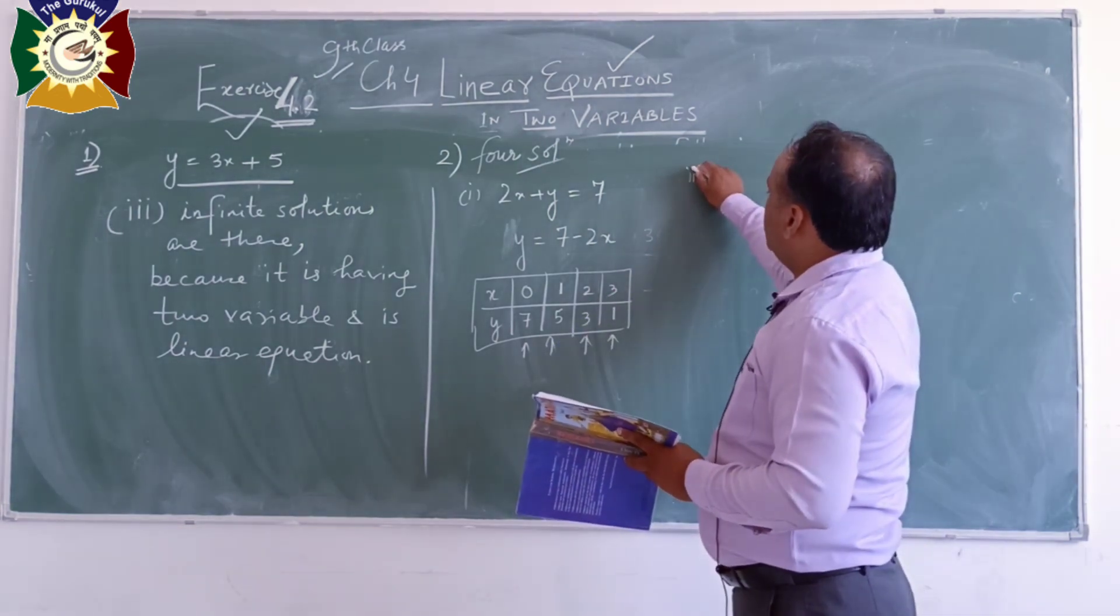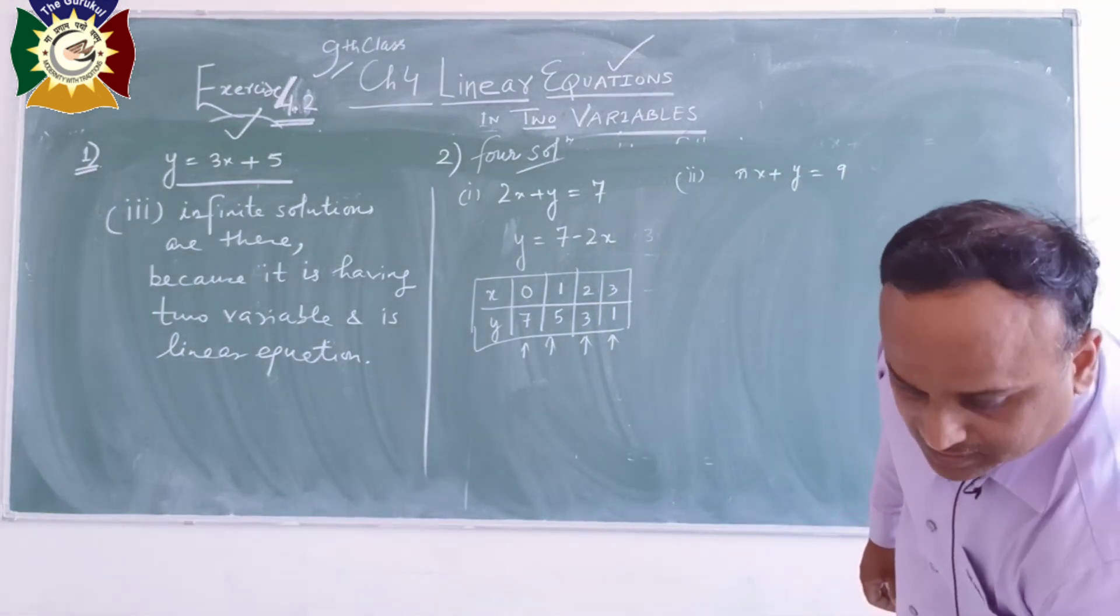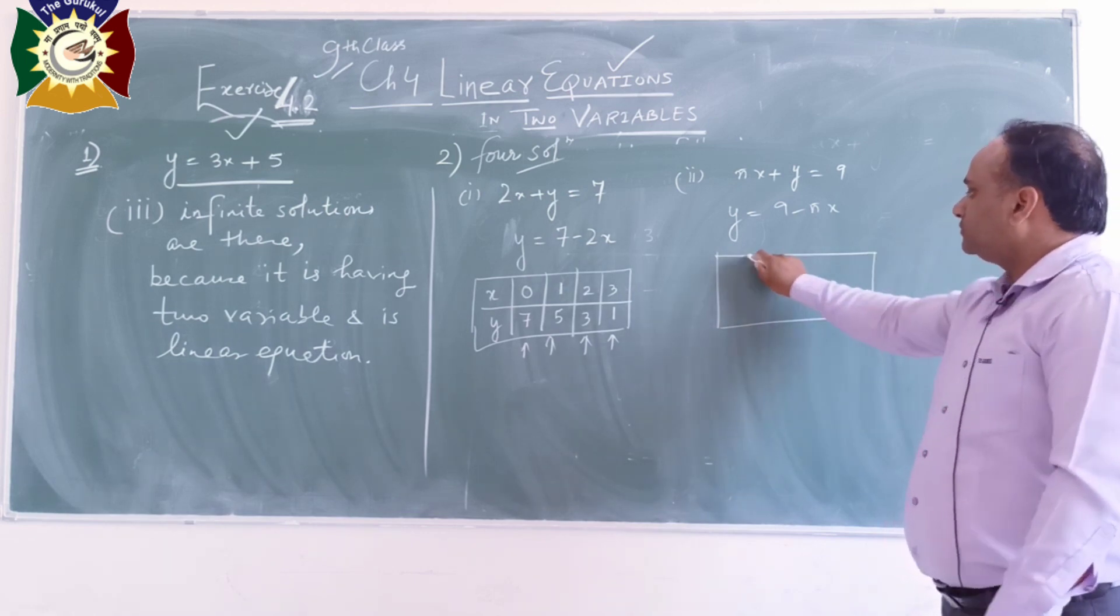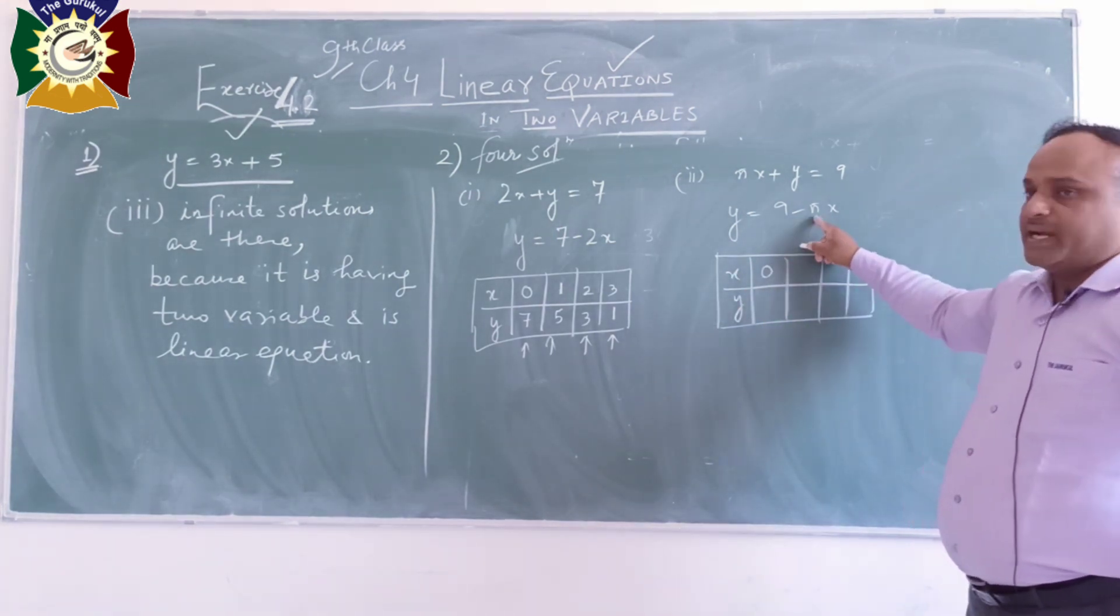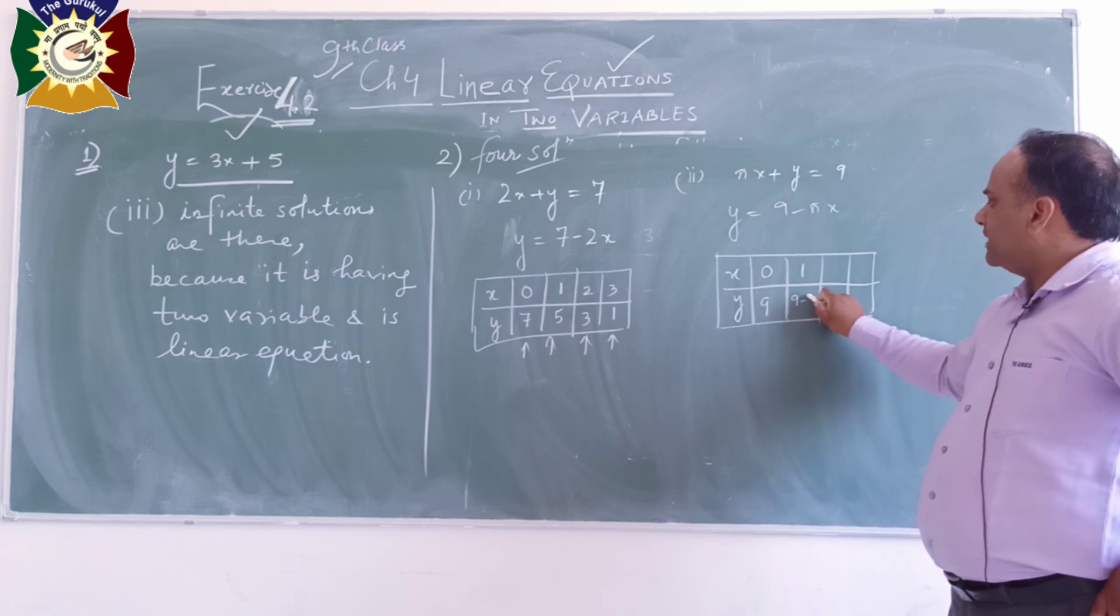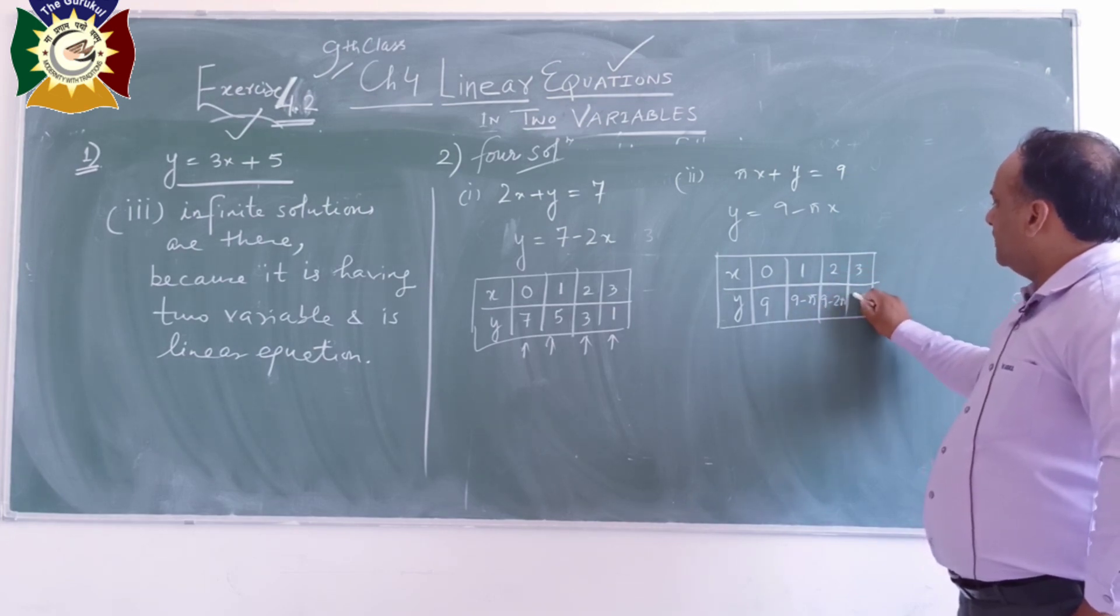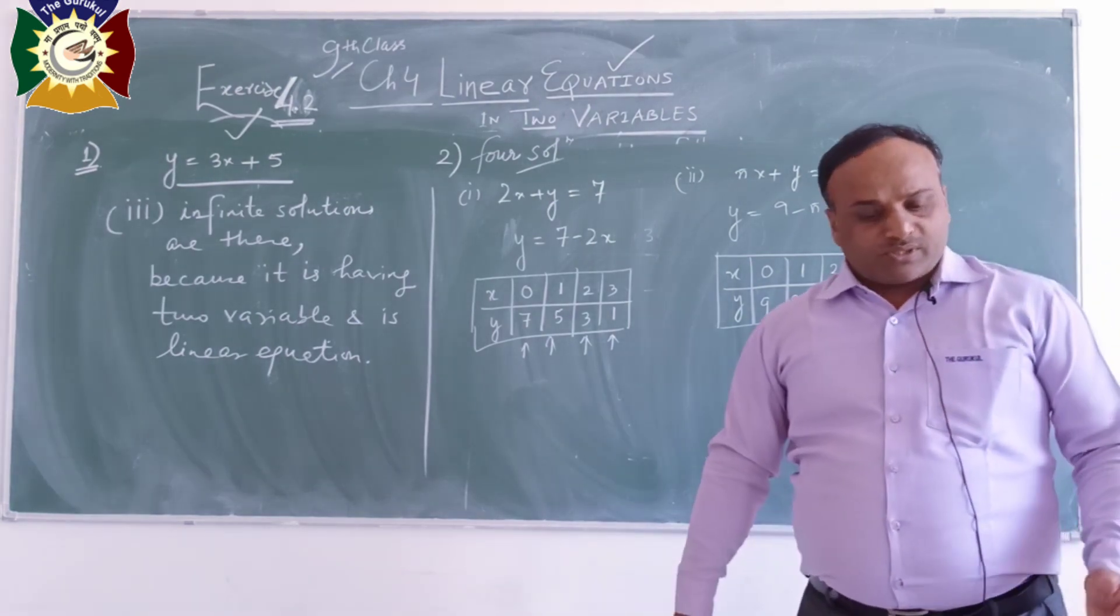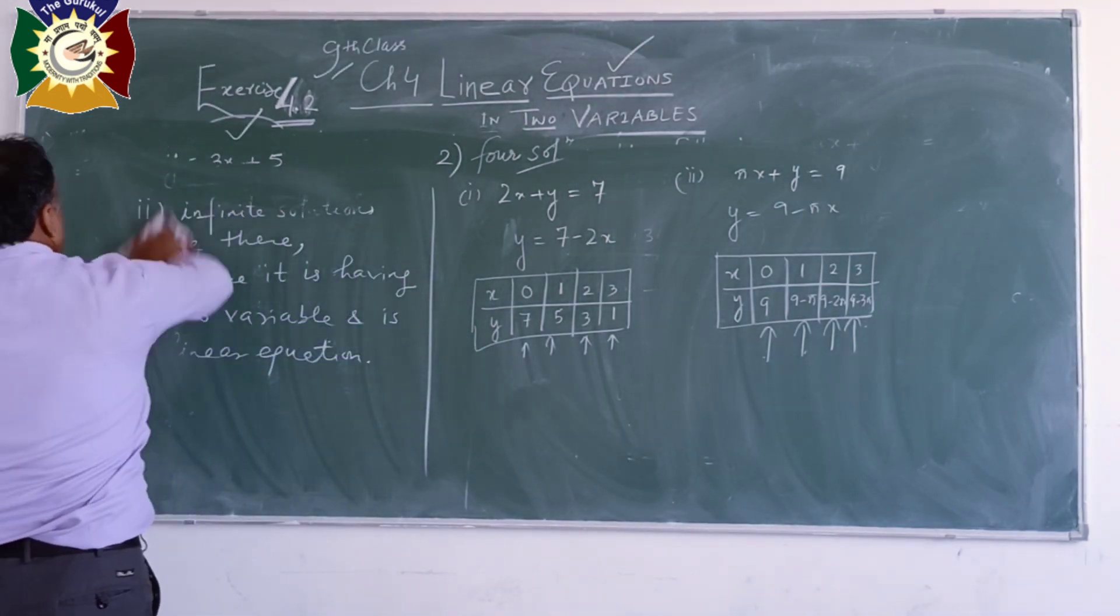Likewise you can find the solutions for the second equation. pi x plus y is equal to nine, so we might write y is equal to nine minus pi x. So let x is equal to zero, it becomes nine. x equals 1: nine minus pi. x equals 3: nine minus 3 pi. So similarly you can do on your own.